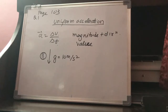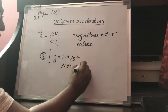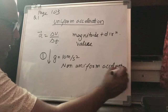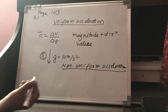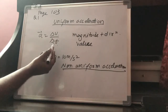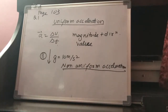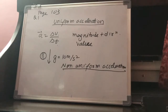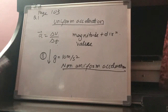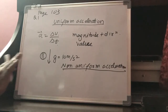Now let us consider the concept of non-uniform acceleration. If a particle undergoes unequal change in velocity in equal time intervals, it is said to have non-uniform acceleration. For example, if I am driving a car and sometimes the velocity changes by 2 meters per second in one second, and sometimes by 3 meters per second — the magnitude of change in velocity is varying — then it is called non-uniform acceleration.